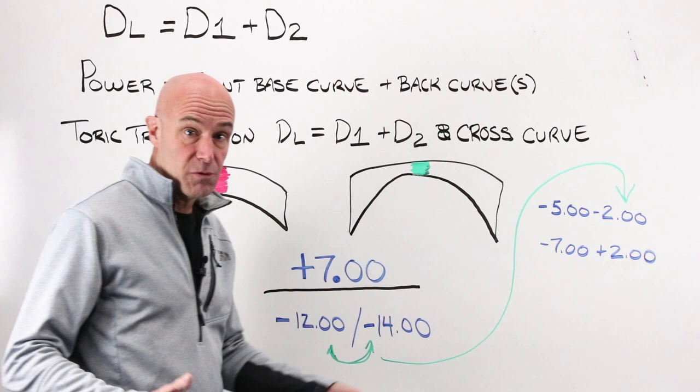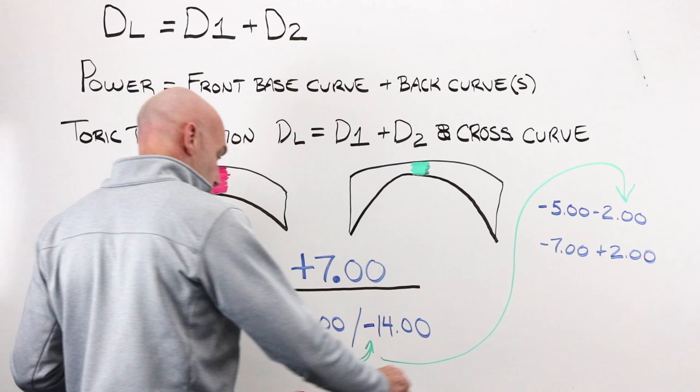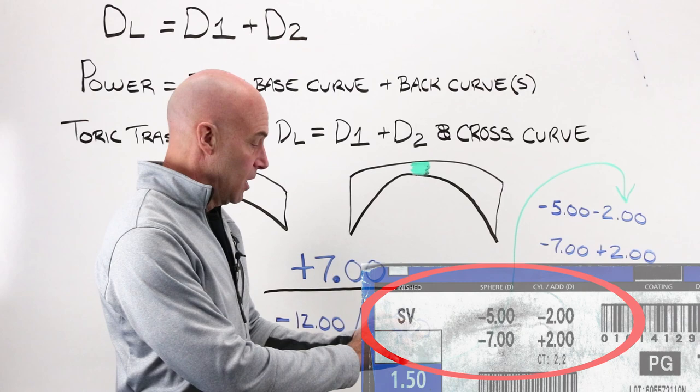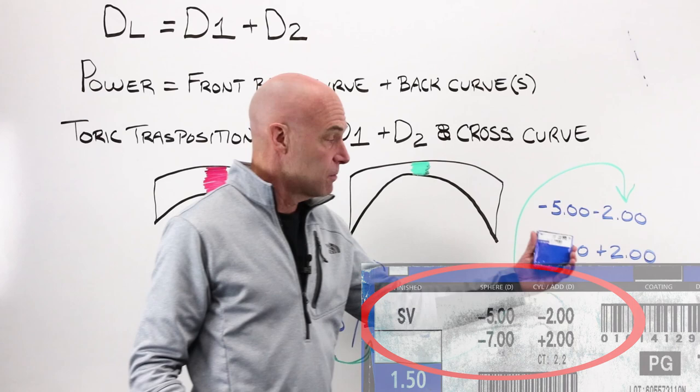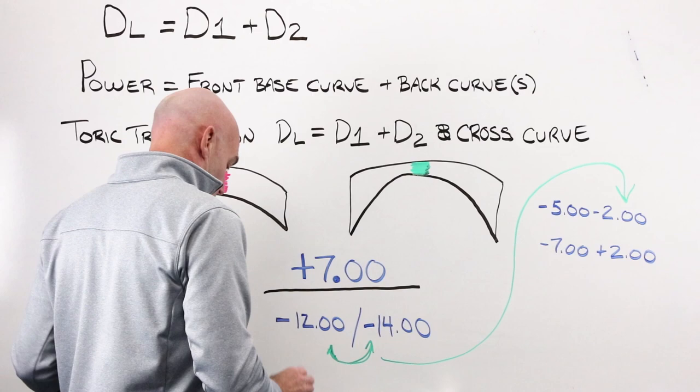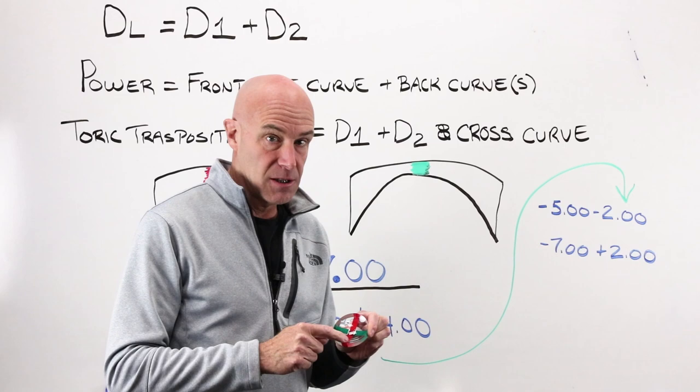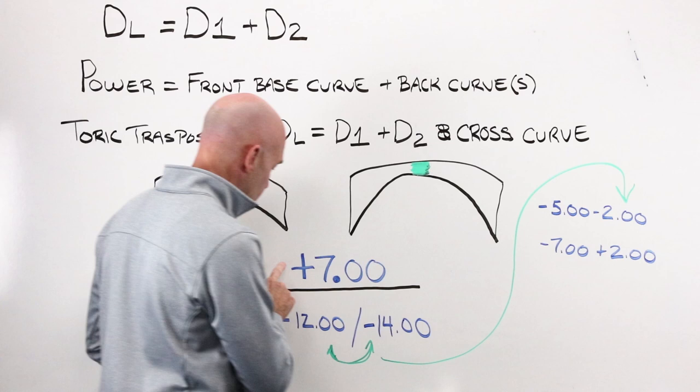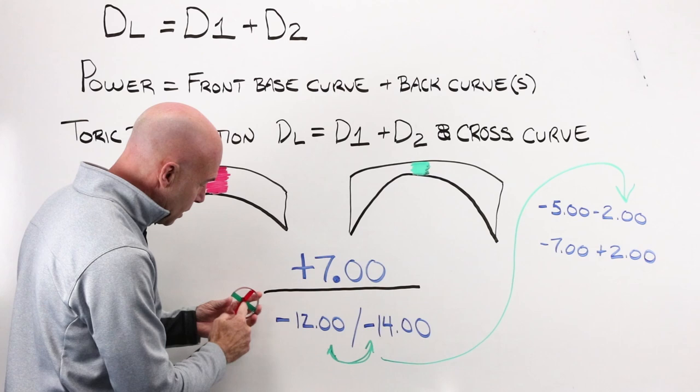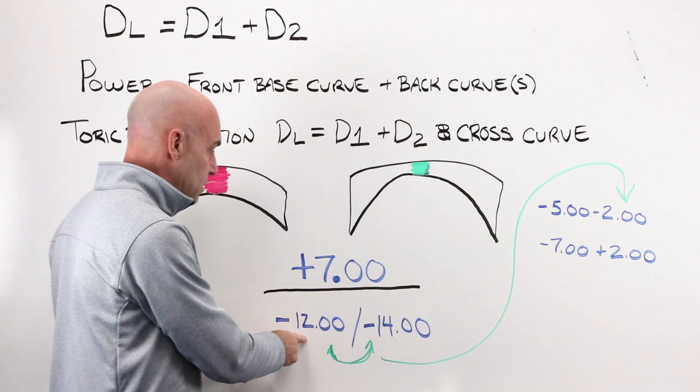If I have a plus seven, and I know the power of my lens, it's marked here on the outside of my package, minus five, minus two, or minus seven, plus two, and there's no question about it. That's what's in this package. That's what this lens came out of. That's what I've got. To create the curve on the back side of this lens, to provide me with minus five, with a front base curve of plus seven, I have to grind away a curve of minus 12. Plus seven, minus 12, gives me minus five.